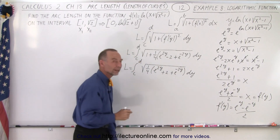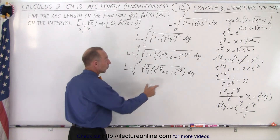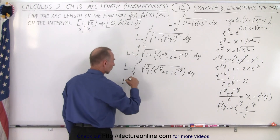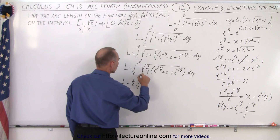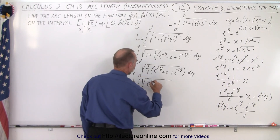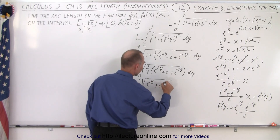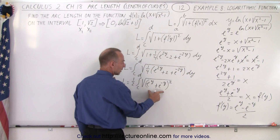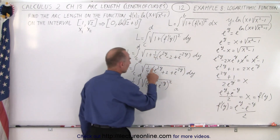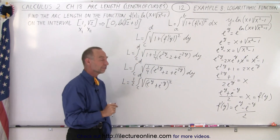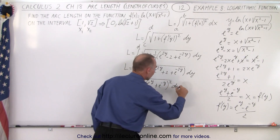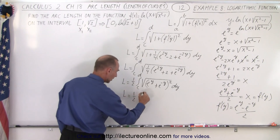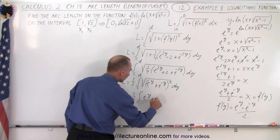Factoring out one quarter again gives a plus 2 there instead of minus 2. We can write the expression inside the square root as the square of a binomial. So L equals the square root of one quarter times the integral from c to d of the square root of the quantity eʸ plus e to the negative y, squared, times dy. The square root negates the square, and we end up with L equals one half times the integral of eʸ plus e to the negative y, dy.